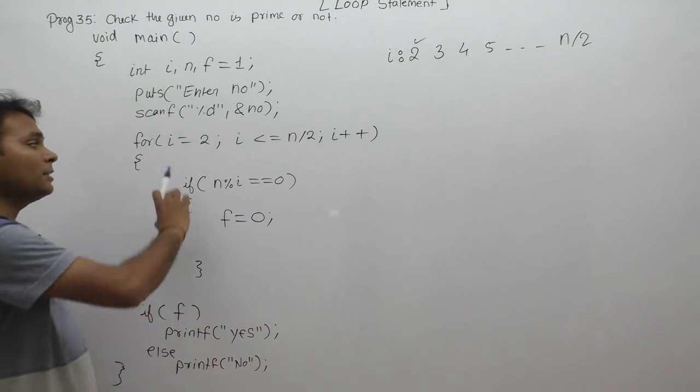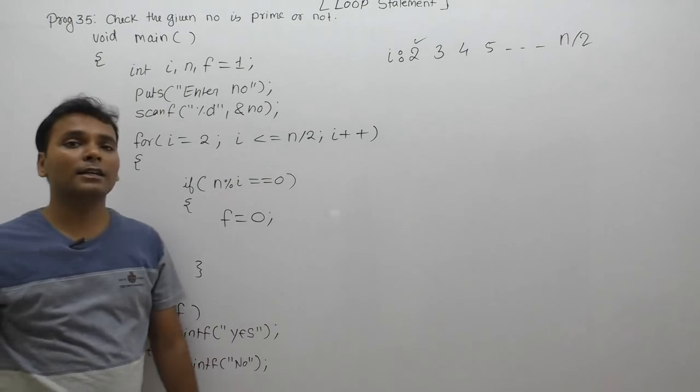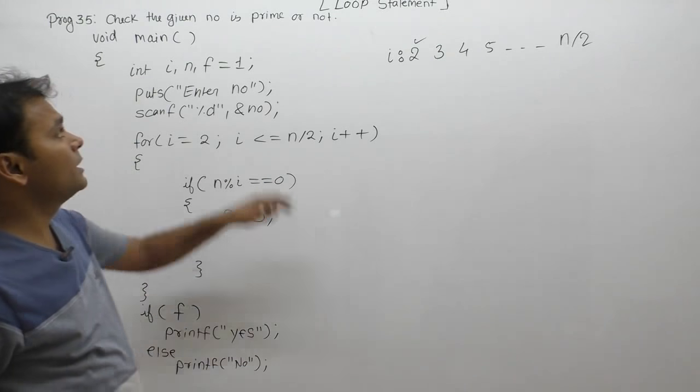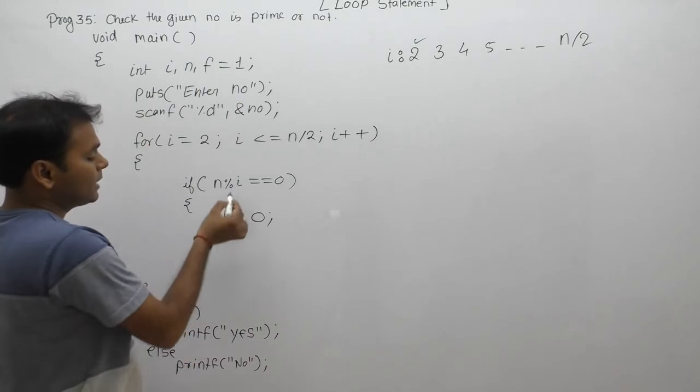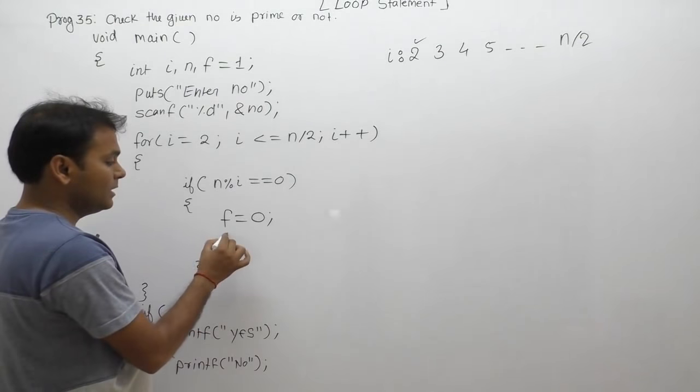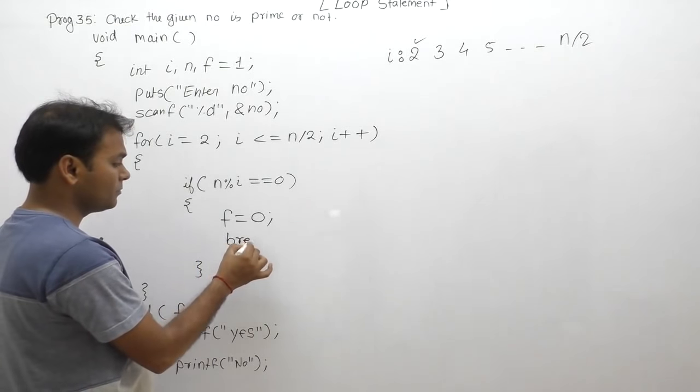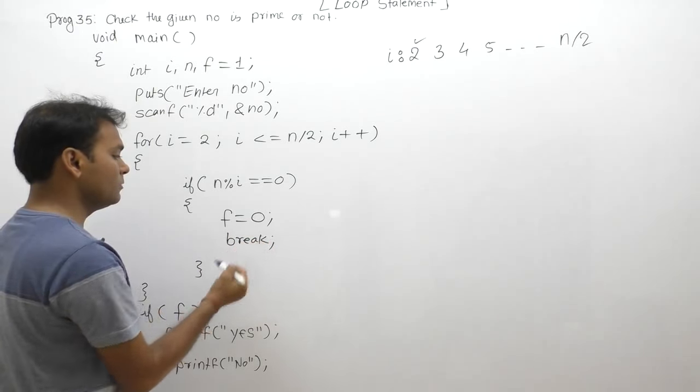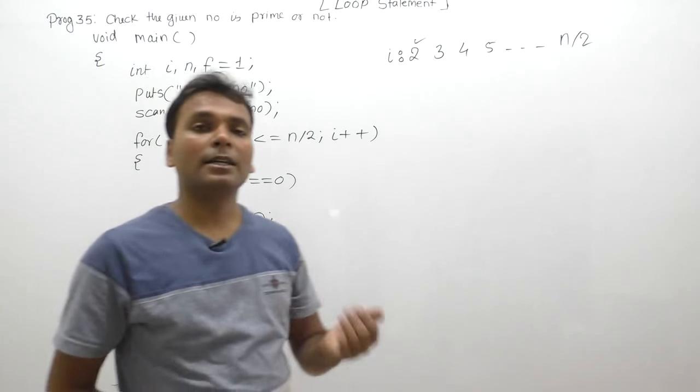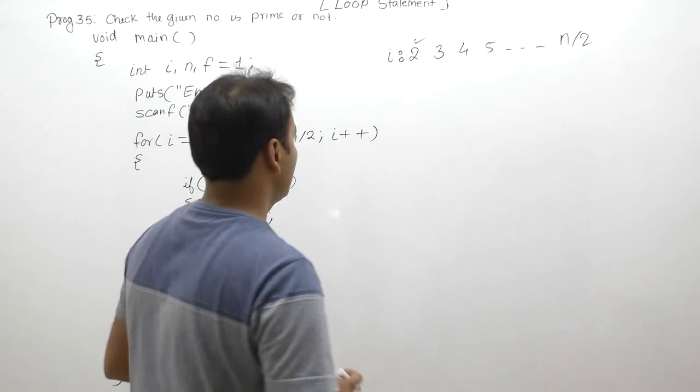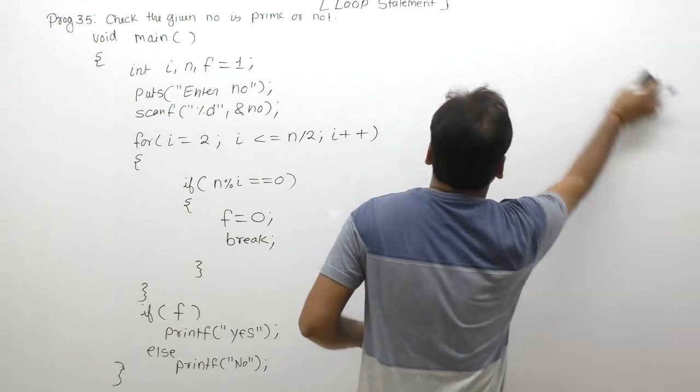When the condition is satisfied, meaning we found a divisor, immediately we set flag value to zero, turning the condition to false. Then we break this loop using break statement. This is the logic for testing to check if a given number is prime or not. For example, let's see an iteration.